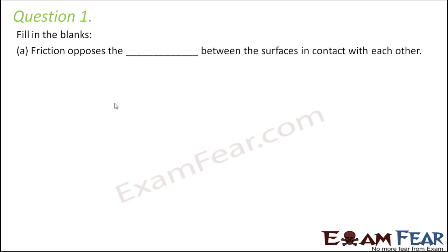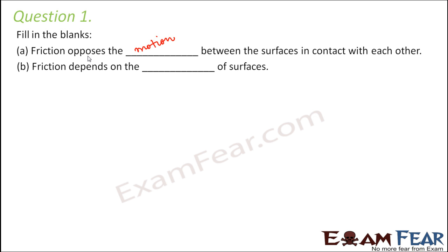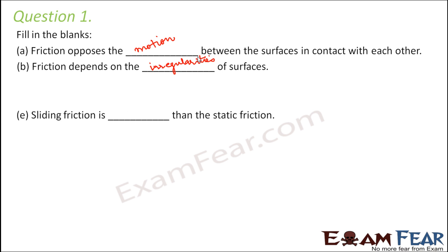Fill in the blanks. Friction opposes the dash between the surfaces in contact with each other — friction always opposes motion or movement. Friction depends on the dash of surfaces. It depends on how rough or smooth the surfaces are, and roughness depends on the irregularities on the surfaces; even smooth surfaces have irregularities, but fewer than rough surfaces.